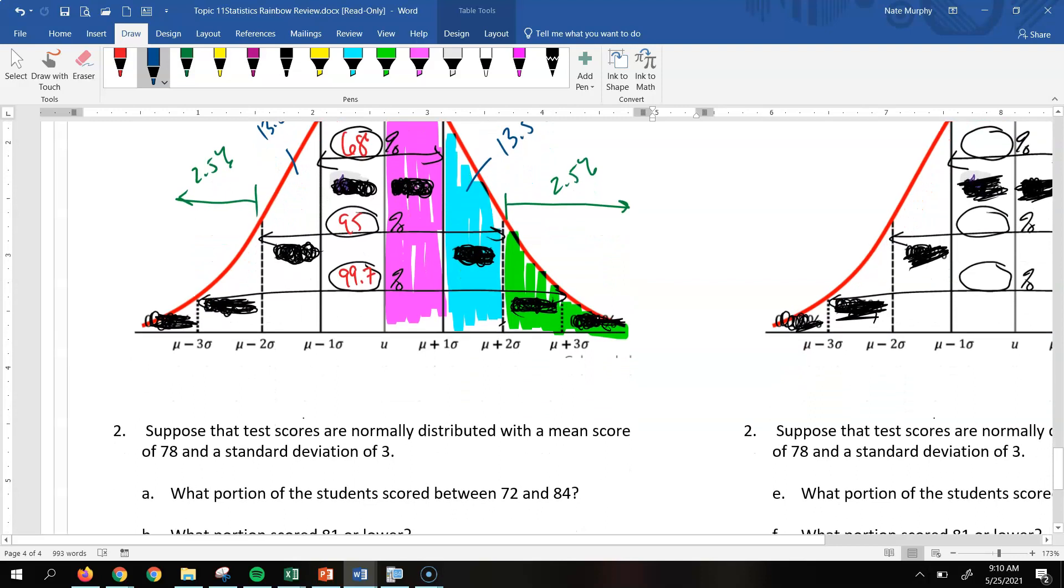Now it says, suppose that his test score is normally distributed with a mean score of 78 and a standard deviation of 3. Let's go ahead and just use this normal curve here and put in this information. So the mean score is 78. So there's your 78. So we're going to have our standard deviation is 3, so we're just going to use that as a scale. So going to the right, 78 plus 3 would be 81, and then plus 3 would be 84, and then plus 3 would be 87. Going backwards, we'd subtract 3. So this would be 75, this would be 72, and this would be 69. So now we can answer these questions.